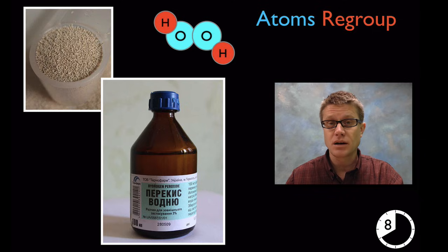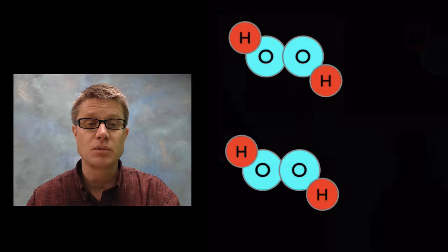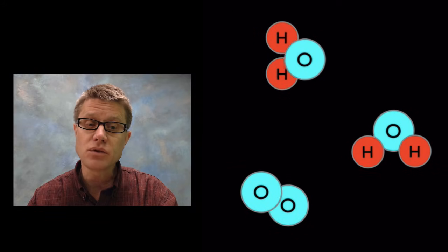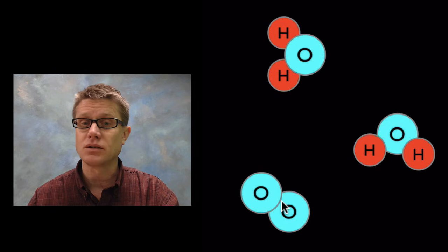As we move up into the middle school we should start talking about atoms and how atoms will regroup and form. A great demonstration I like to do even in my class today is to take a little bit of hydrogen peroxide. Put it in a ziplock bag with a little bit of yeast. That yeast contains an enzyme that's going to break the hydrogen peroxide down. What's it going to become? It's going to become two things. You're going to get water forming. And then we're going to have oxygen forming. So you'll get these little bubbles inside the bag.